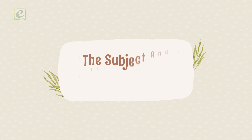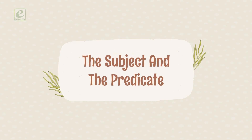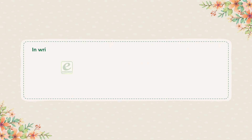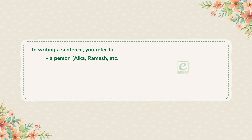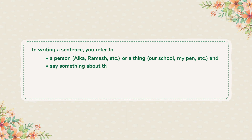The subject and the predicate. In writing a sentence, you refer to a person — Alka, Ramesh, etc. — or a thing — our school, my pen, etc. — and say something about that person or thing.